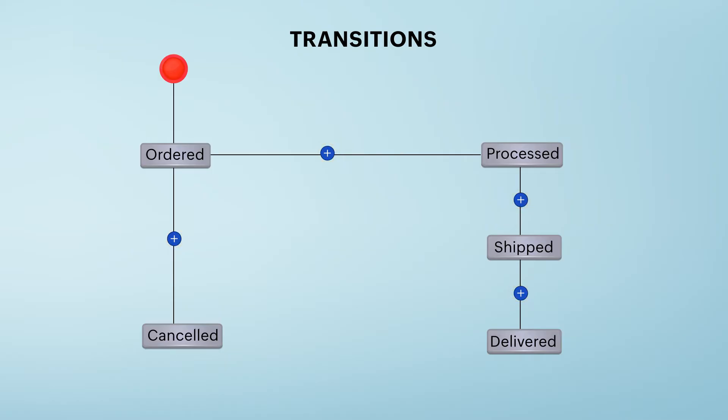In the order processing example, you can create a transition, such as picked by courier, to move the process from the processed to the shipped stage. Between shipped and delivered, there can be another transition called delivered to customer. The stage gets updated when the transition owner performs the action. This is called a regular transition.